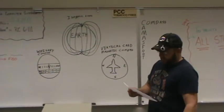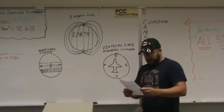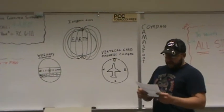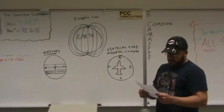This weight gives us our acceleration and turning errors. Our turning errors, we use an acronym known as UNOS. It stands for undershoot north, overshoot south.